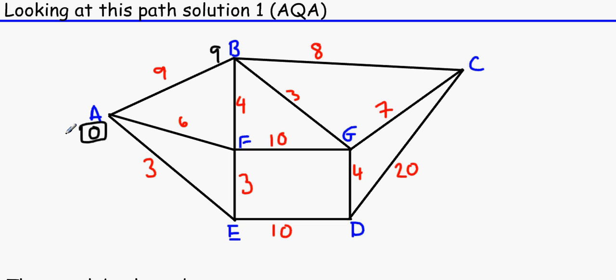And this is stage one by the way, or stage zero. So we've done that. And if you walked across this road, the temporary label would be six. And along this road, it would be three.